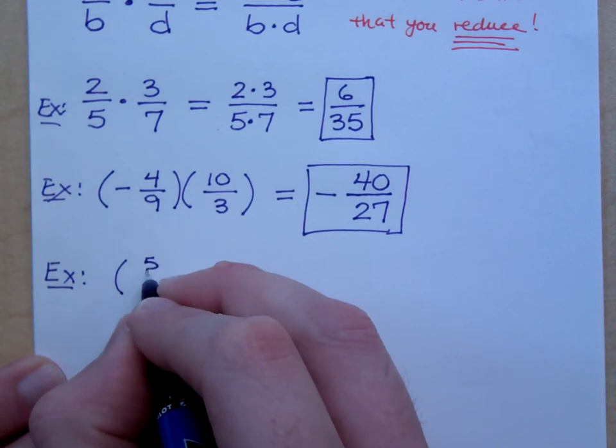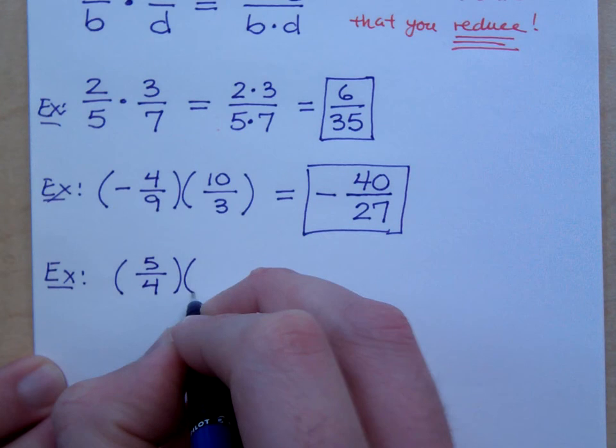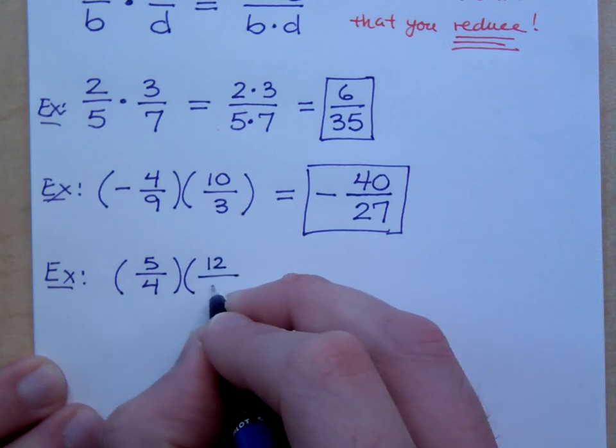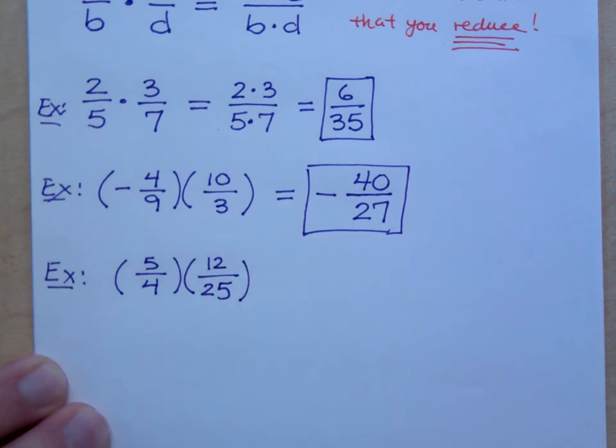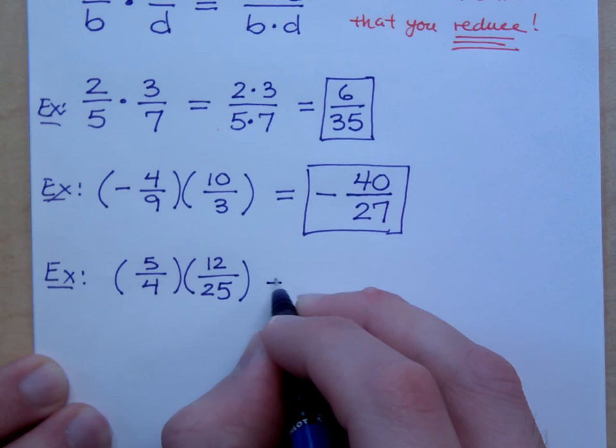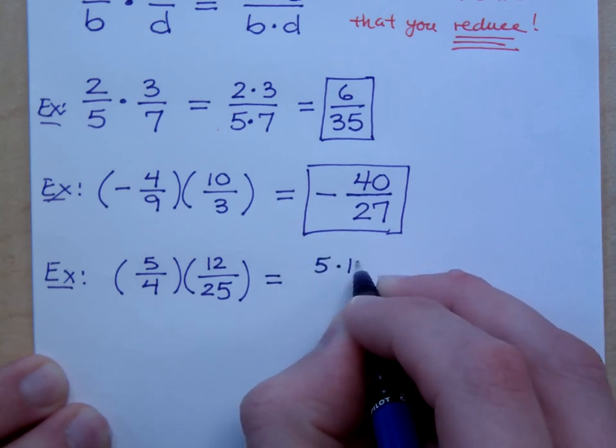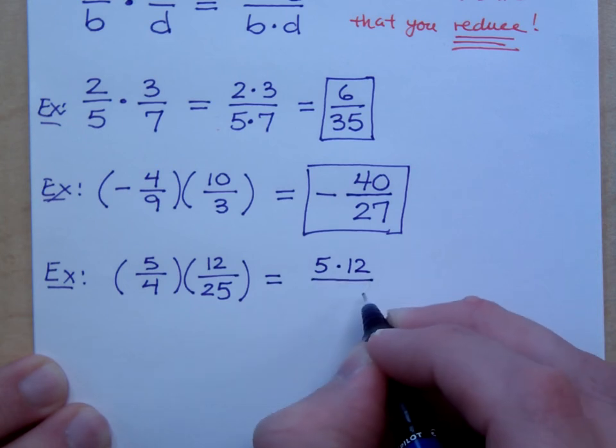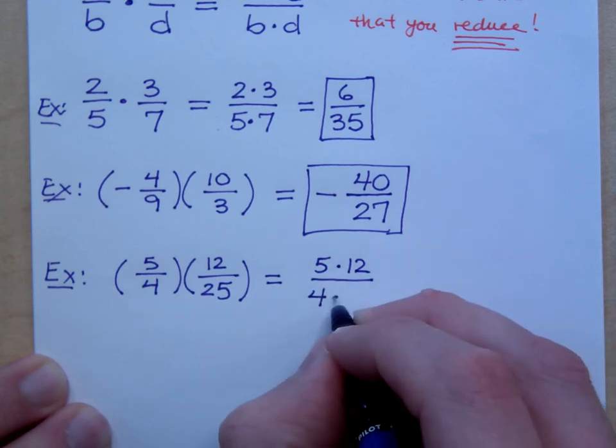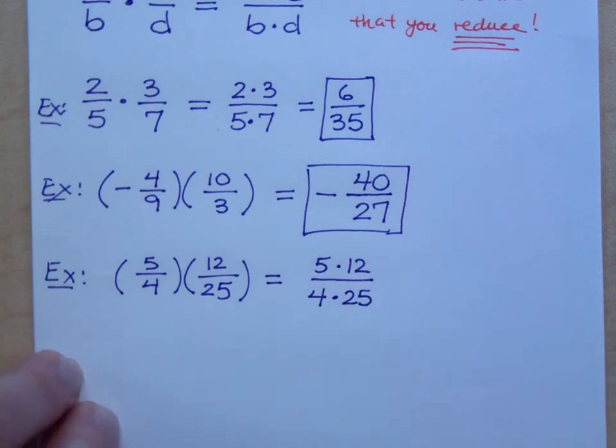If I start off with mixed numbers, then you should probably finish in mixed numbers. A lot of times, the instructions will tell you what you need to do. All right. Suppose I have 5 fourths times 12 over 25. There are several ways of doing this.